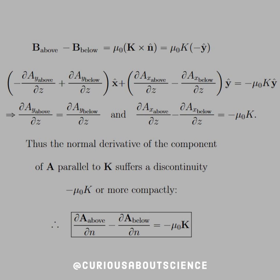We see that the ŷ components must be equal, so ∂A_x/∂z above minus ∂A_x/∂z below equals negative μ₀K. Thus the normal derivative of A parallel to K suffers a discontinuity of -μ₀K, or more compactly, the boundary condition we came to know.